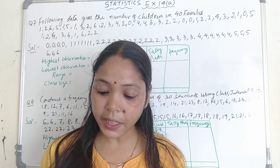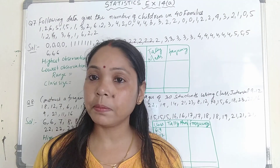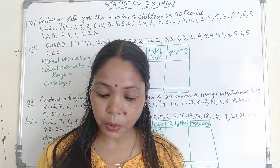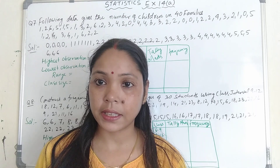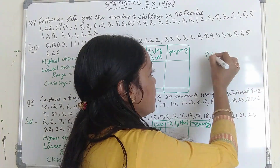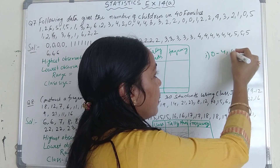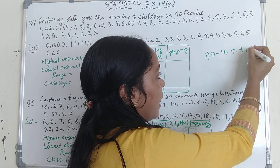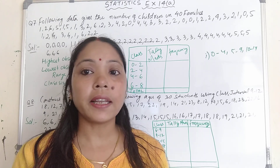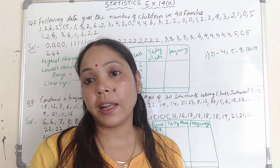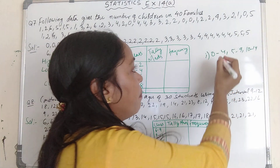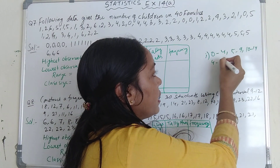Write the class size in each of the following. Some class intervals are given, and in this class interval you have to find the class size. In the first it is given 0 to 4, then 5 to 9, then 10 to 14. We all know that class size means from the class interval you subtract upper limit minus lower limit. So here upper limit is 4 and the lower limit is 0.